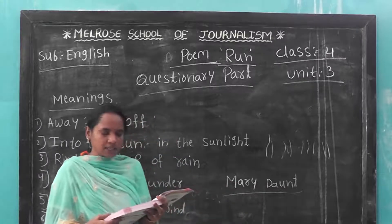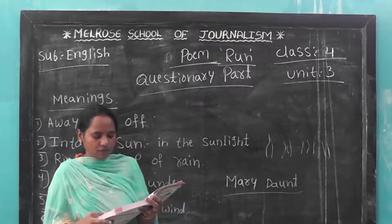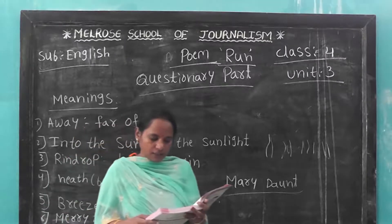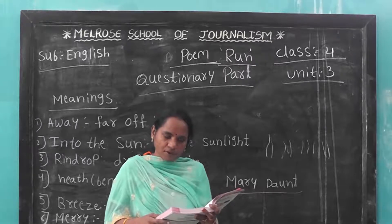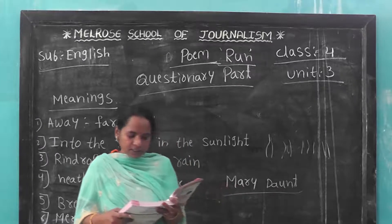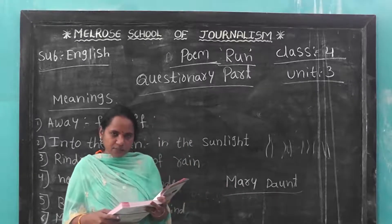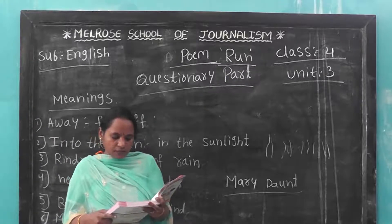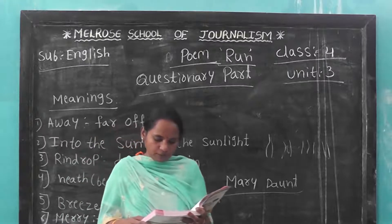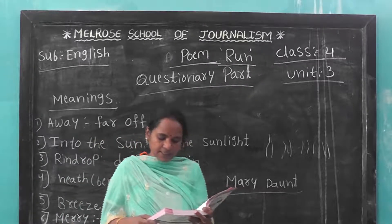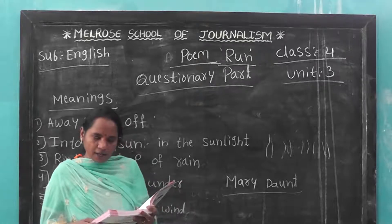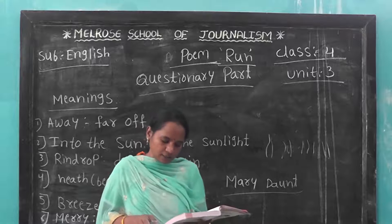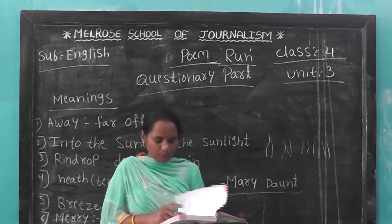See here. First one: 'away' means far off. 'Into the sun' means in the sunlight. 'Raindrop' means drop of rain. 'Need' means winner under. 'Race' means competition to see who runs the fastest. 'Breeze' means a light wind. 'Hillside' means the side of a hill. 'Lane' means a narrow road. 'Meadow' means a field of grass. And 'merry' means happy.